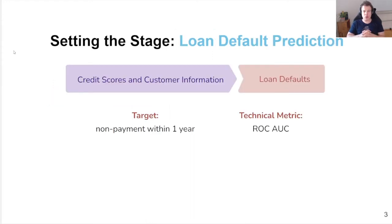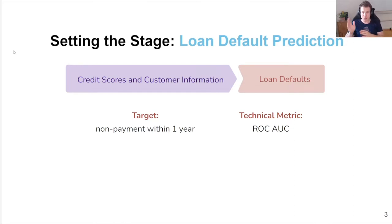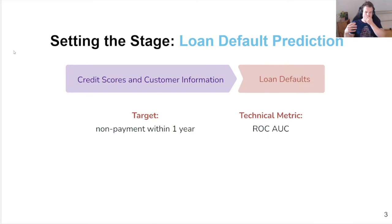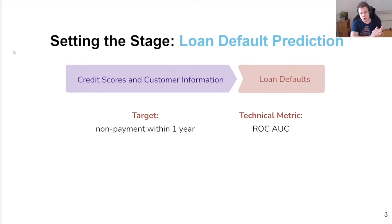Before we jump into that, let's set the stage with a very simple use case. We're going to talk about a loan default prediction use case, which is typical in banks — a binary classification of whether a person is going to default or not. We're going to take the credit scores and the customer information, and based on that, predict whether a person is going to default on a loan. Once we deploy this model to production, we want to know whether it's still performing well, whether the predictions are reliable, and if something goes wrong, we want to know that it went wrong and why. Our target is nonpayment within one year, so we have to wait a year until the target is available. As our technical metric, we're going to use ROC AUC, which is a very typical metric in binary classification models.